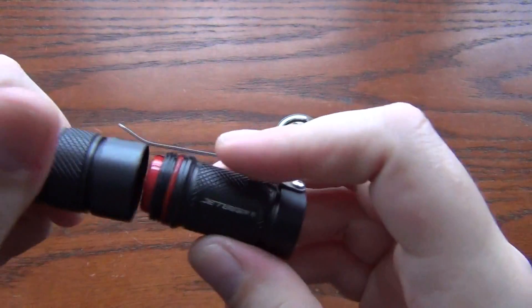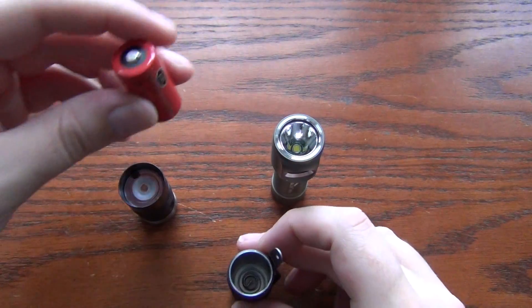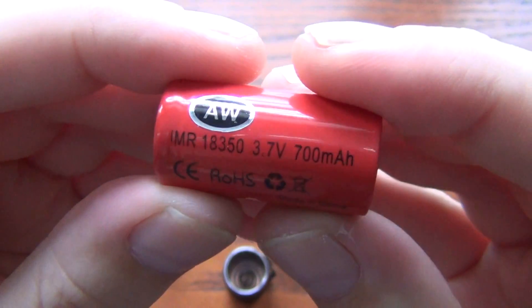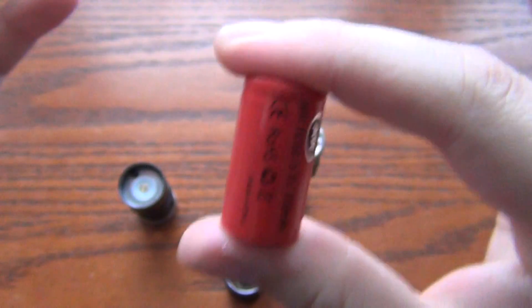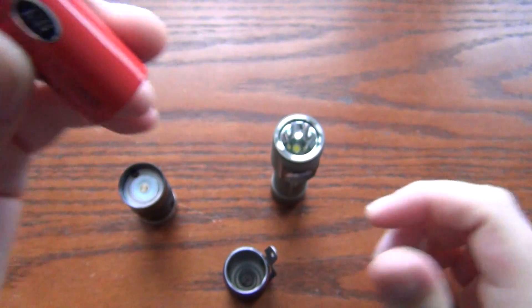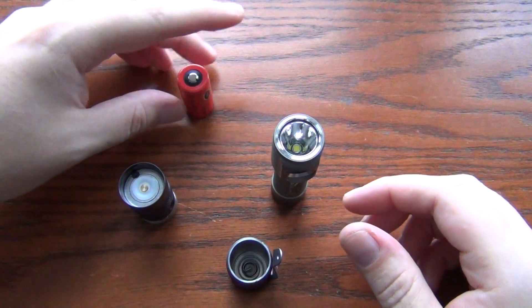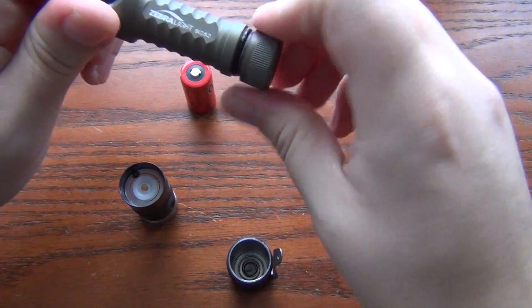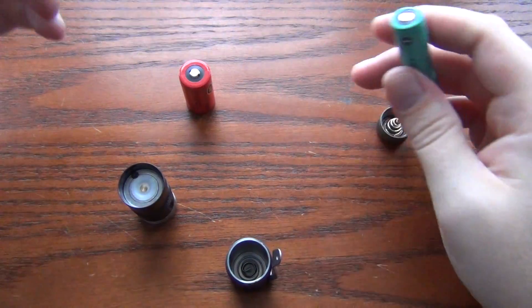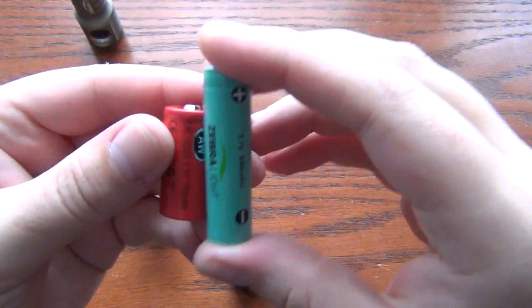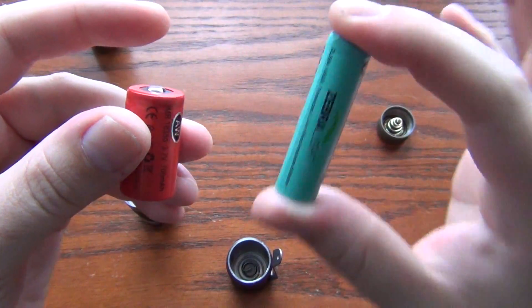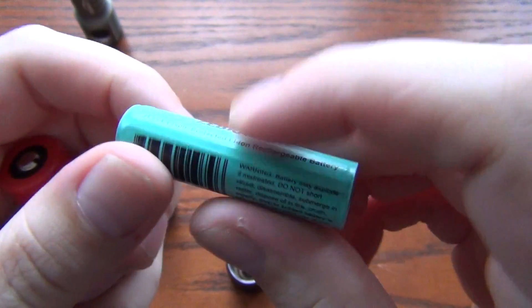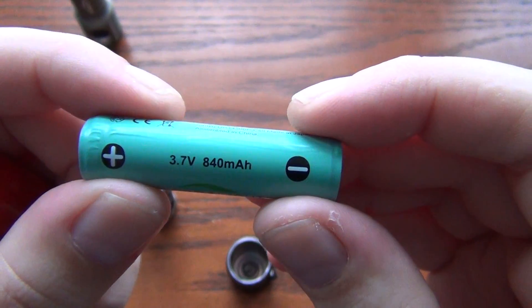This uses a 16340 or a CR123. Or it'll also fit this battery which is a 18350, basically a shorter version of an 18650. The nice thing about the Zebralight is the fact that it uses this 14500 battery. So this battery will definitely last longer. This is rated at 700 milliamps. This is 840.